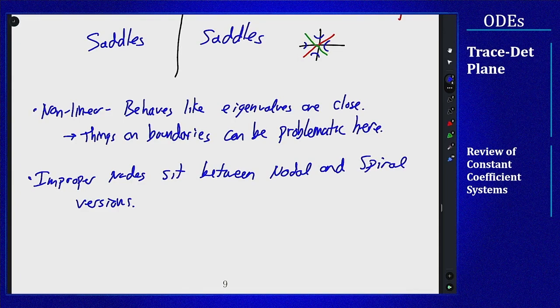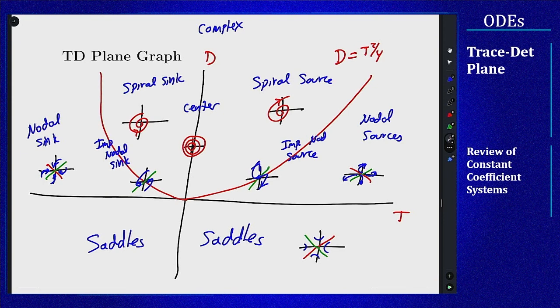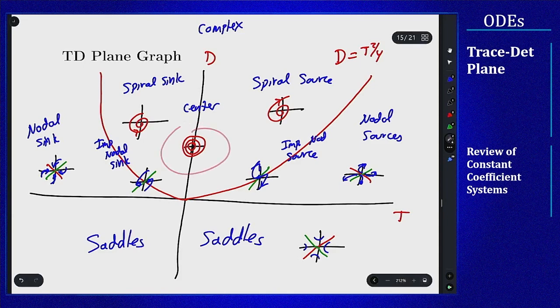And then the other boundary to keep in mind here is the one between spiral sink and spiral source, which are centers. This also kind of makes sense because if you take a spiral sink and you start decaying slower and slower and slower you're going to look more like a center until you stop decaying. When you stop decaying you become a center and then you start expanding and that's spiral source. So the center here is sort of a boundary again between spiral sinks and spiral sources.